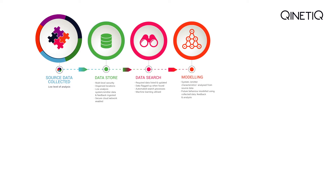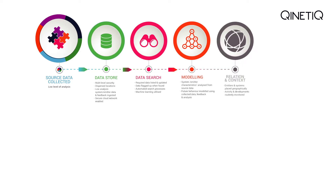Modeling is a vital tool for predicting system or emitter characteristics. Following use on operations, models are regularly updated to reflect post-mission analysis. The majority of mission data products will be specific to where they will be used in the world, so relation in context is important.